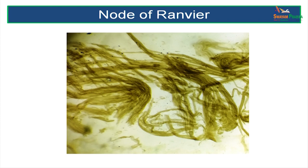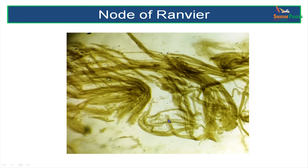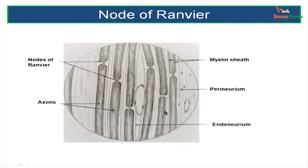A node of Ranvier can be studied by doing a special stain of nerve fibers with osmic acid. When you stain a myelinated nerve fiber with osmic acid, the myelin stains a dark brown or blackish color. You can see a small constriction which is the node of Ranvier between two segments covered by the Schwann cell. In an illustration, you can see the node of Ranvier, the axon, and the myelin sheath which stains.